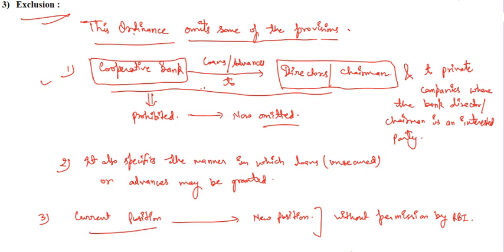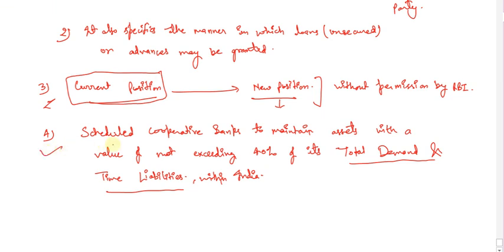This new ordinance also specifies the manner in which loans that are unsecured or advanced may be granted by the cooperatives. The third section under this exclusion part talks about the movement of a bank. Let's say a bank is under moratorium and wants to move from one village or town to another. Earlier they were prohibited, but now permission can be granted with prior permission from RBI. Earlier, one more provision was also there: scheduled cooperative banks had to maintain assets with a value not exceeding 40% of total demand and time liabilities within India. These four are the provisions that have been omitted under the new Banking Regulation Amendment Ordinance 2020.